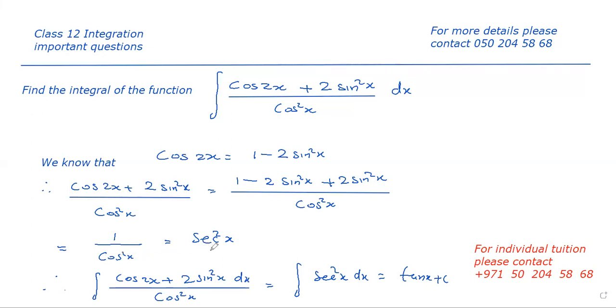1 by cos square x equal to sec square x. So the integration is reduced to integral sec square x dx.